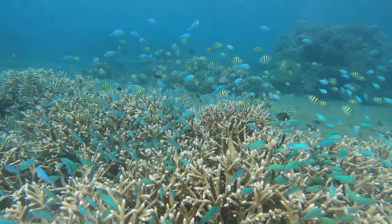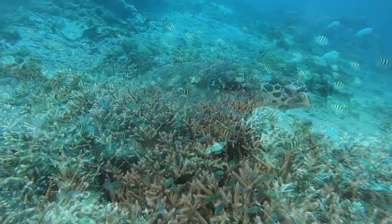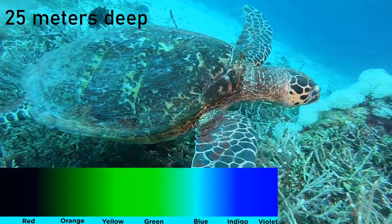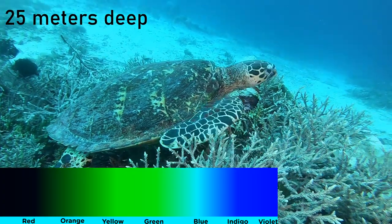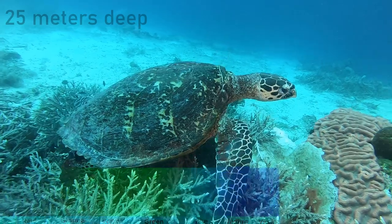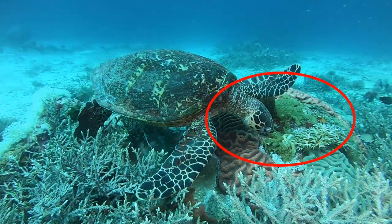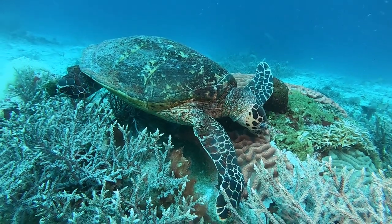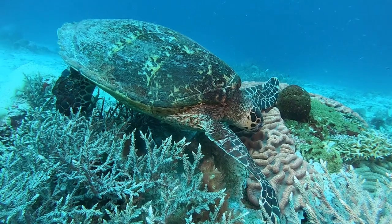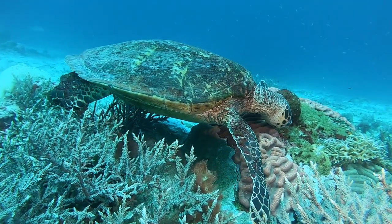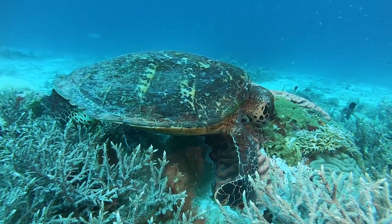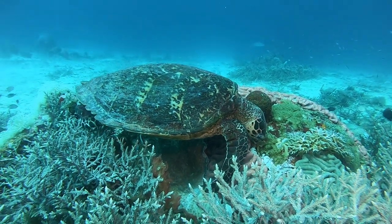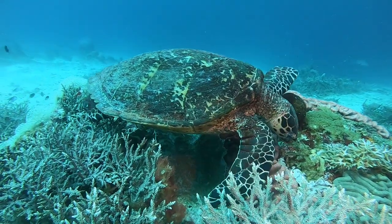The deeper you go, the more extreme this effect becomes. At a dive site 25 meters deep you will lose a significant part of the warm colors. I filmed this turtle at about 25 meters and you can see most of the footage is blue. There's an exception — the head and the front of the turtle and the coral it's munching on have a little bit of red, but this is because of an external source of light: a video light.